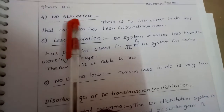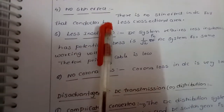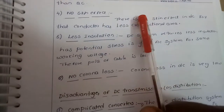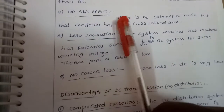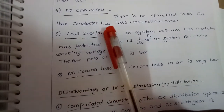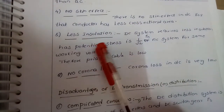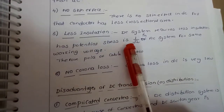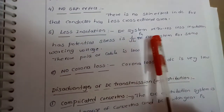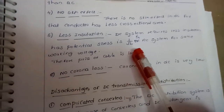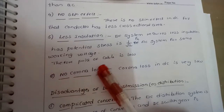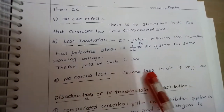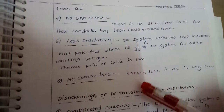Another advantage of DC distribution is no skin effect, meaning the conductor is fully utilized. Less insulation is required for DC systems because of less potential stress — the potential stress in AC is 1 by root 2 for the same working voltage, so DC cables are cheaper. There is also no corona loss in DC systems.